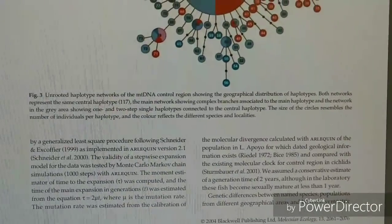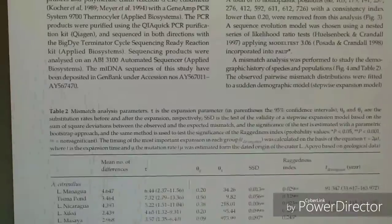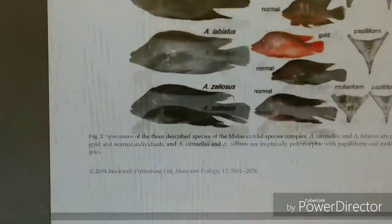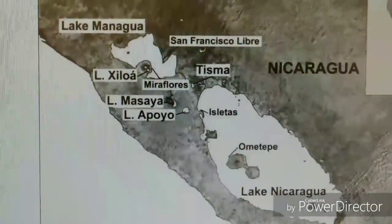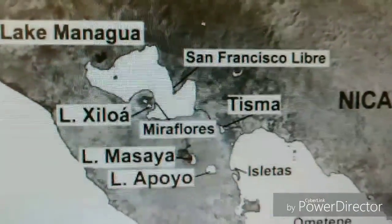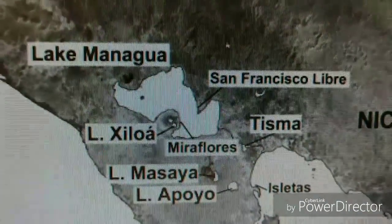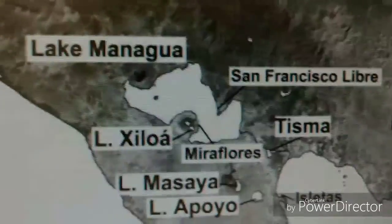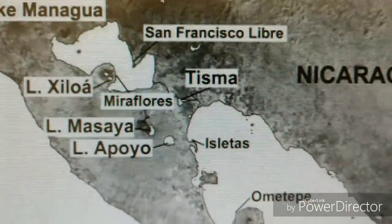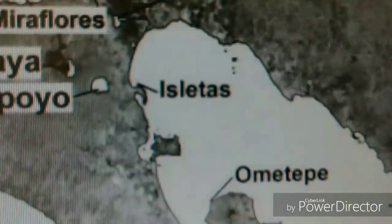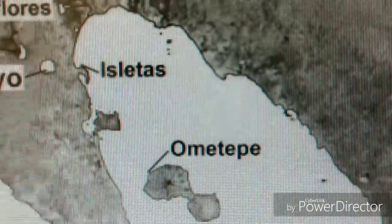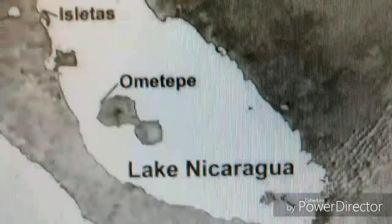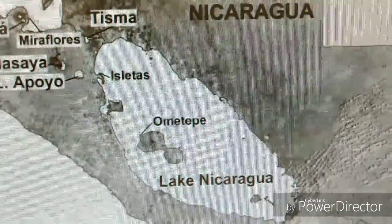Now for years we have been given newly discovered cichlid descriptive names or classifying them by collection points, and I see nothing wrong with that. Although the endemic people of these collection points already knew of these now-popular cichlid species for generations. But you must ask yourself why all of a sudden we are in a mad rush to classify all these different subspecies.